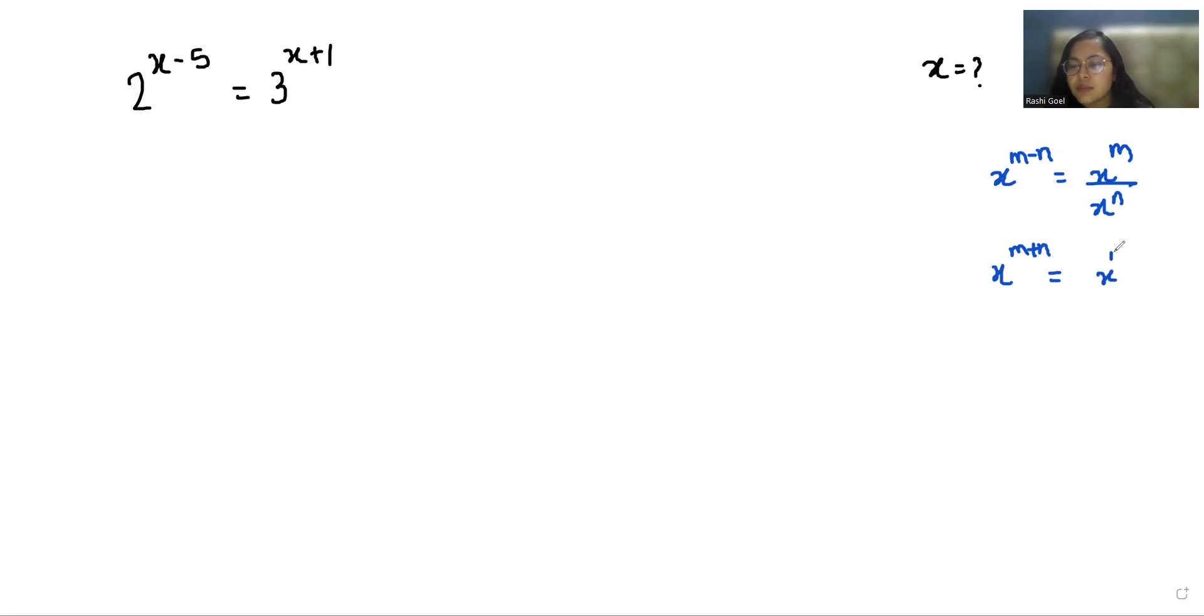So we have 2^x / 2^5 here, and here 3^x × 3. Now 2^x / 3^x equals 2^5 × 3.